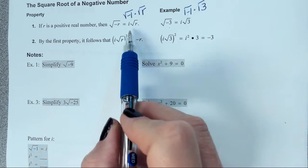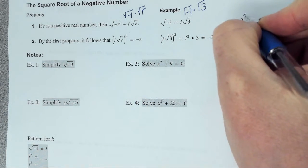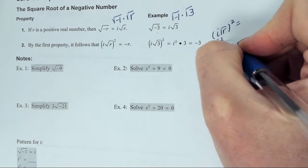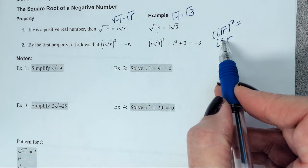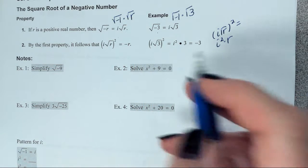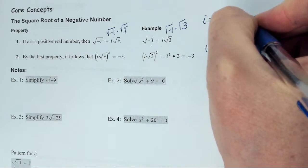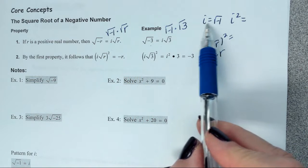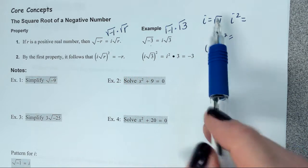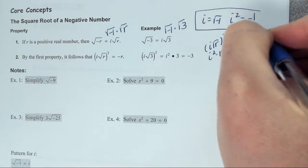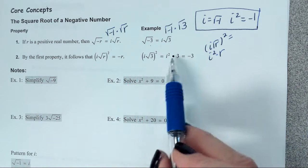They also state that i radical r squared equals negative r. Let's look at why this is true. If I have i radical r and I square it, I get i squared times r (since radical r squared is just r). I squared equals negative 1 — that's something I definitely want you to write down. Since i equals the square root of negative 1, when you square a square root the radical goes away, so i squared equals negative 1. Therefore, i squared times r equals negative r.